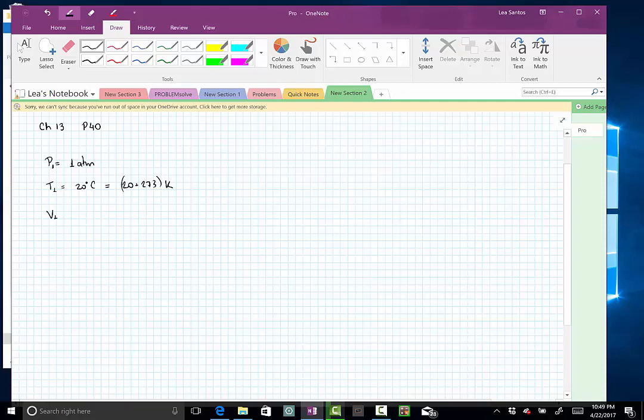Now this balloon escapes and goes high up, reaches a very high altitude. The temperature there is much lower, 5 Celsius. Again, let's put this in Kelvin: 5 plus 273.